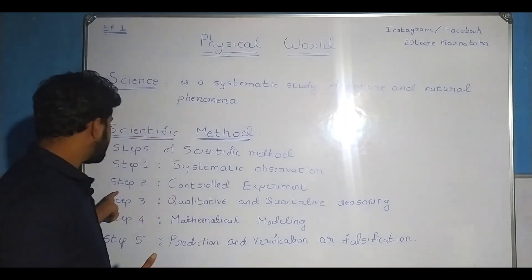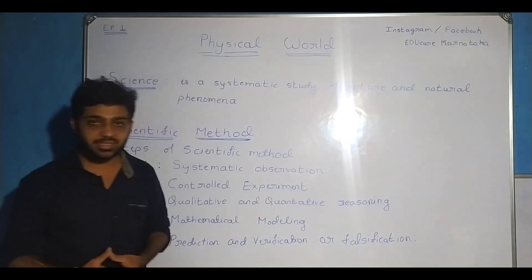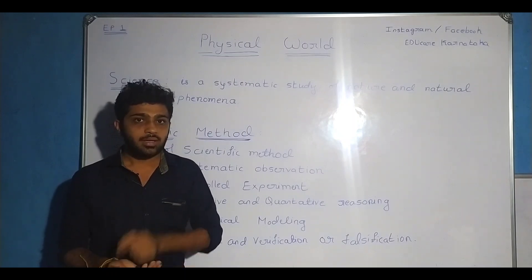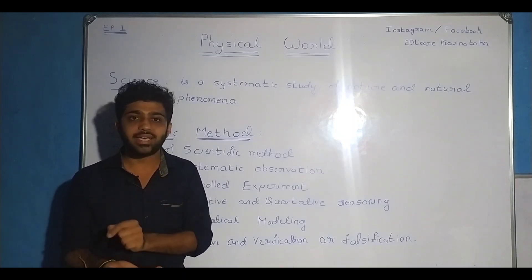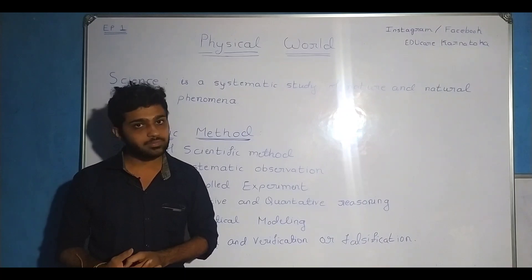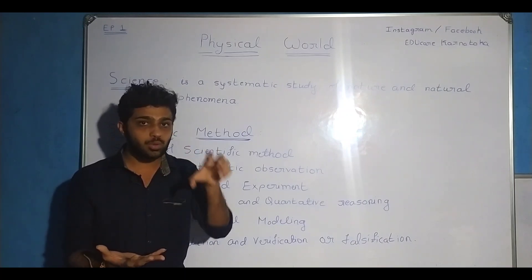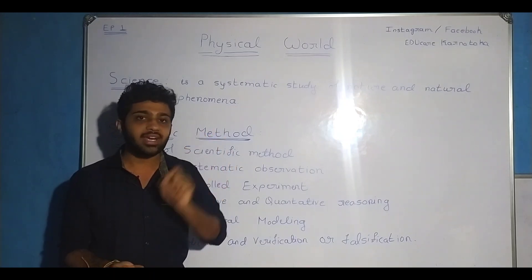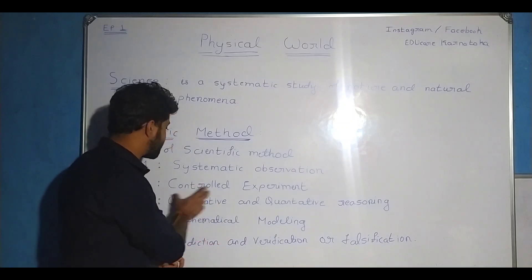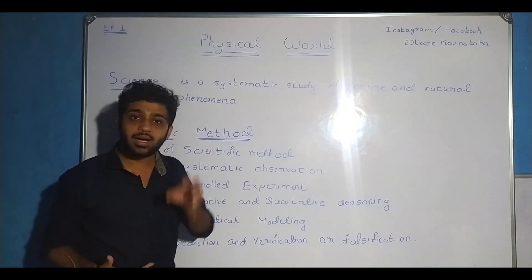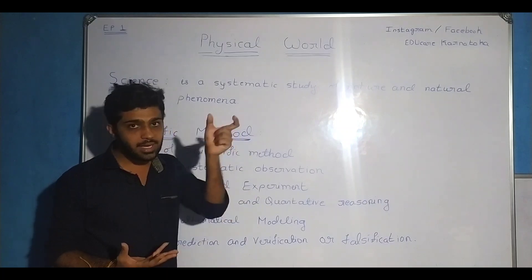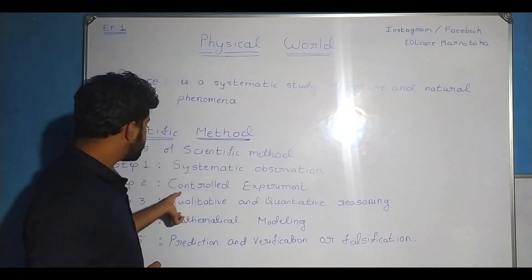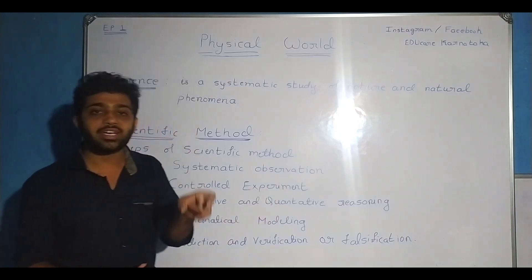The third step is qualitative and quantitative reasoning. In this step, we give the reason for a natural phenomenon in a qualitative manner as well as a quantitative manner. What is the meaning of qualitative and quantitative? Let us understand using Newton's law of gravitation as an example.